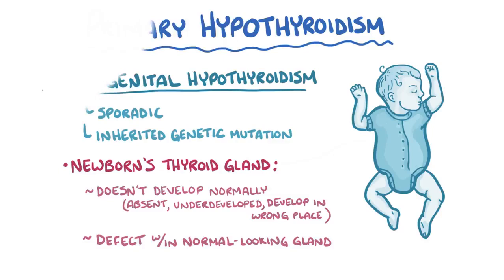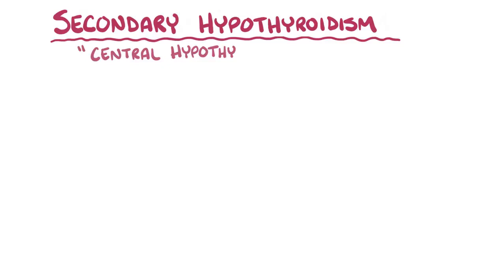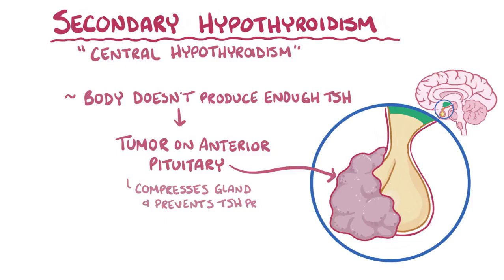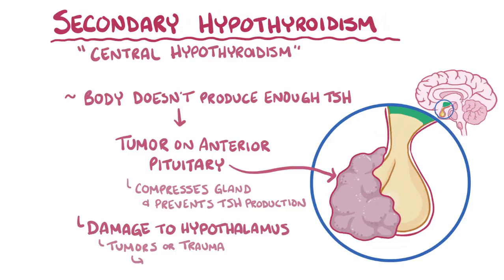In secondary hypothyroidism, also called central hypothyroidism, the issue is that the body doesn't produce enough TSH. This typically happens because there's a tumor in the anterior pituitary which compresses the gland and prevents TSH production, or because there's damage to the hypothalamus from tumors or trauma which decreases thyrotropin-releasing hormone production.